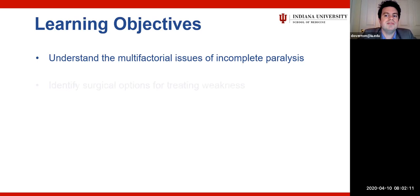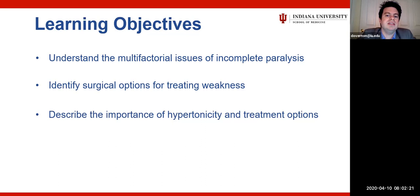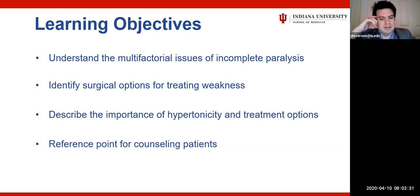The focus of this talk is not really the nuts and bolts of how to do surgeries or techniques, but more about how to think about incomplete facial paralysis and develop a strategy and plan. My goals are for you to understand the multifactorial issues, learn about surgical options for treating weakness, realize that hypertonicity is increasingly important, and understand treatment options for hypertonicity. These slides should also serve as a reference for counseling patients about available options and when to consider more invasive interventions.